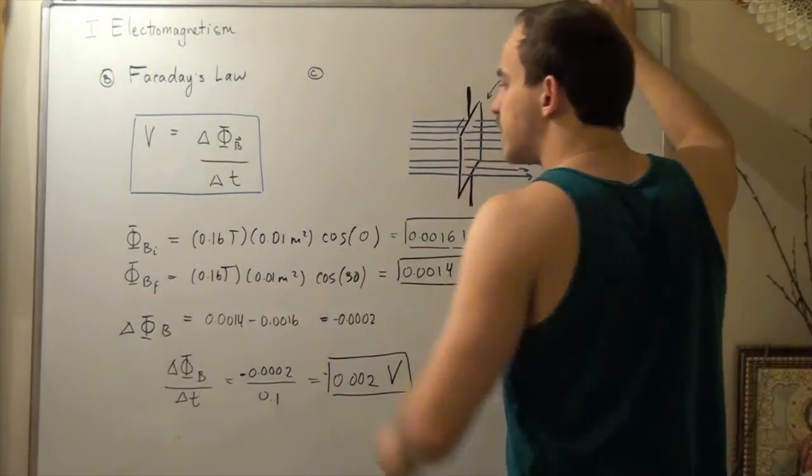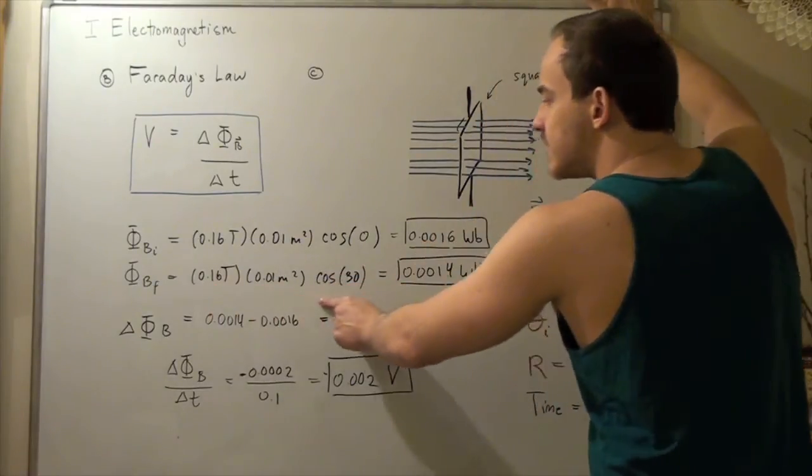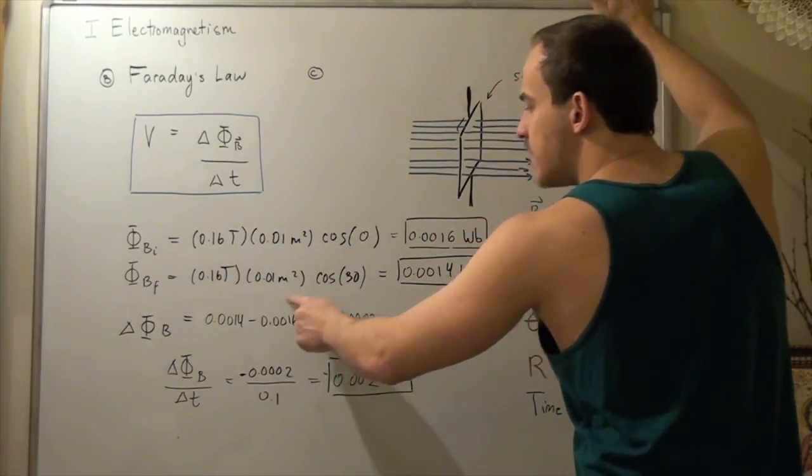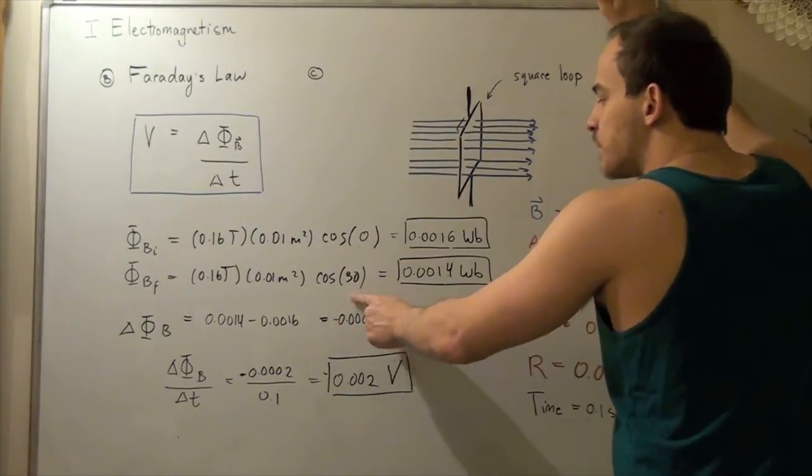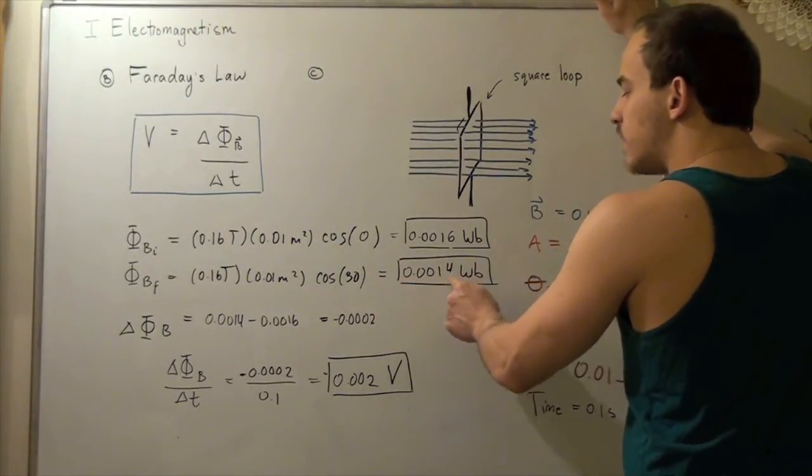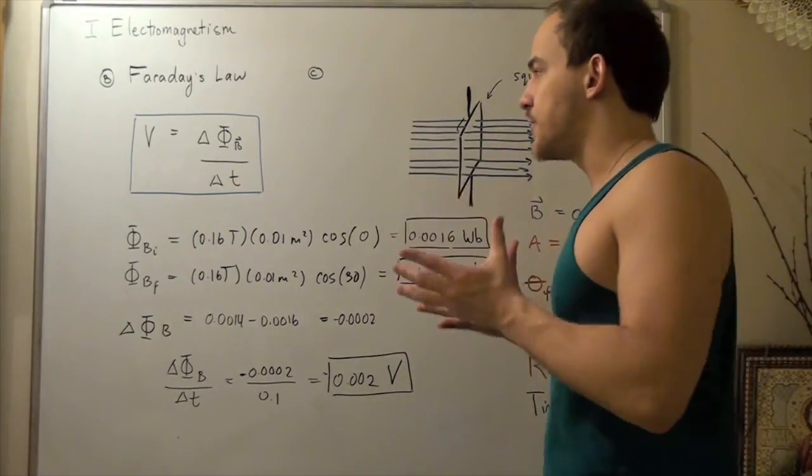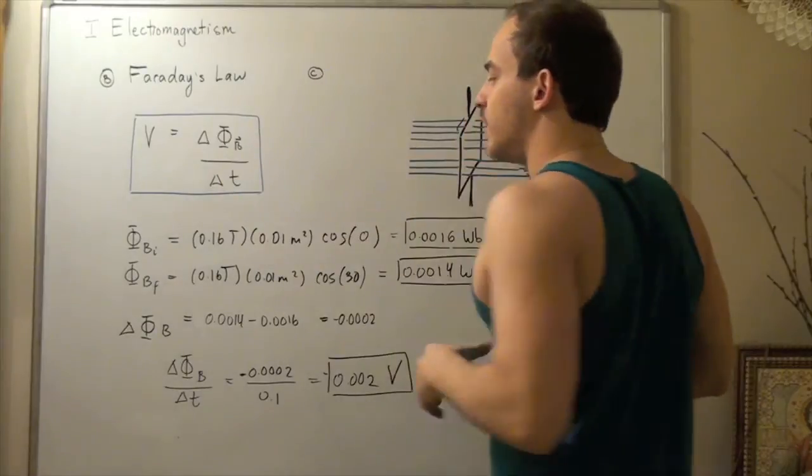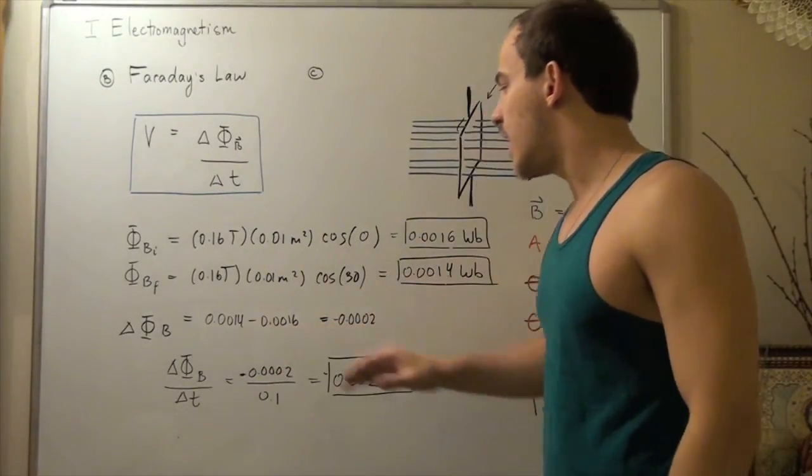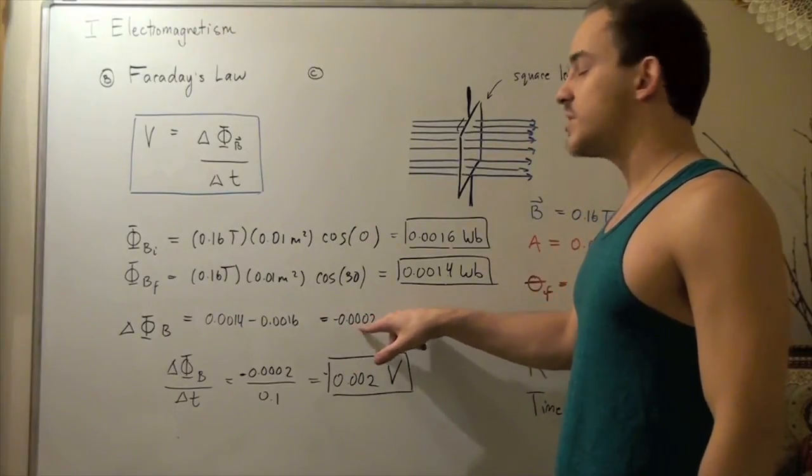Likewise, to find the final magnetic flux after we rotate it 30 degrees, we plug these guys in. So these two guys are the same, but this is now cosine 30. So this is a bit less than this guy. So 0.0014 Weber. So now to find the change or the difference in my magnetic flux, I simply subtract the two guys, subtract initial from final, and I get negative 0.0002.